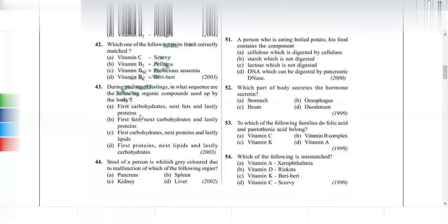If a person's stools are whitish-gray in color, this is due to malfunction of the liver. The liver produces bilirubin; if the liver malfunctions, bilirubin is not produced and does not enter the stools, making them grayish.